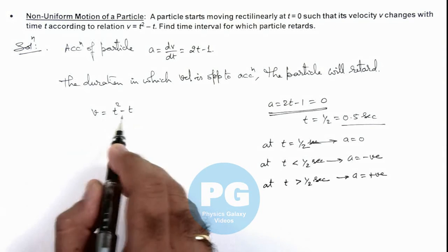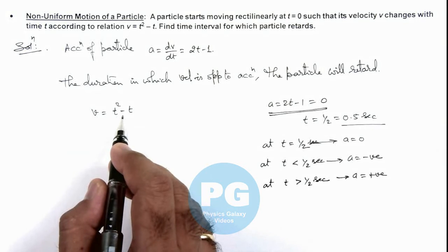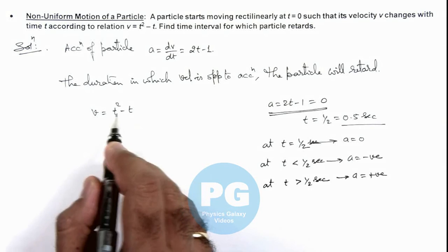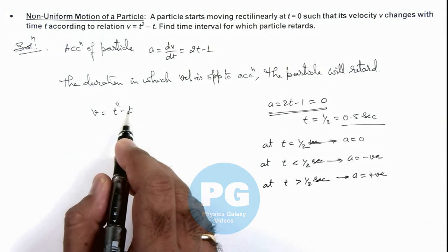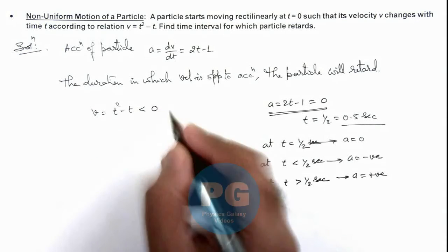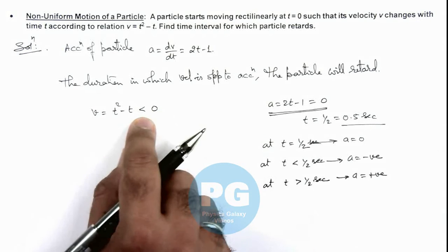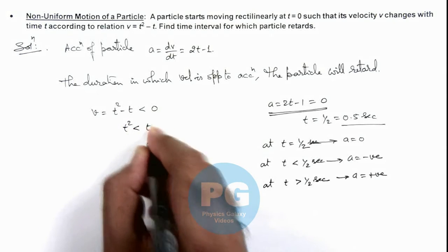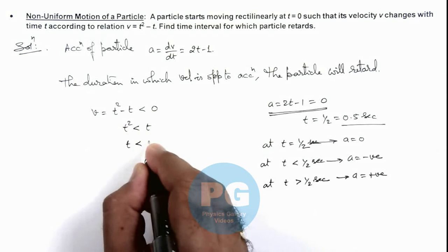On the timeline where velocity is becoming positive or negative, we can see that if t² - t < 0, then when t² < t, we can write t < 1 second.